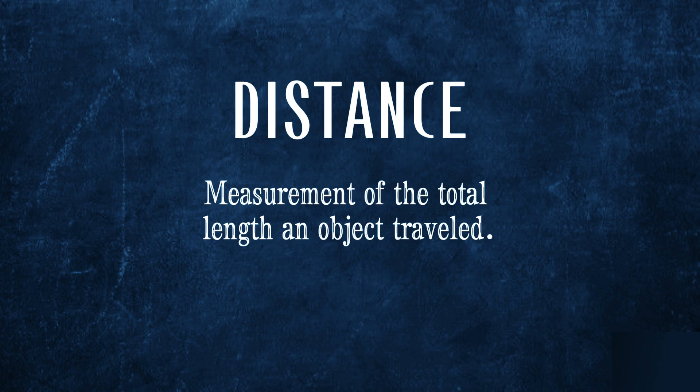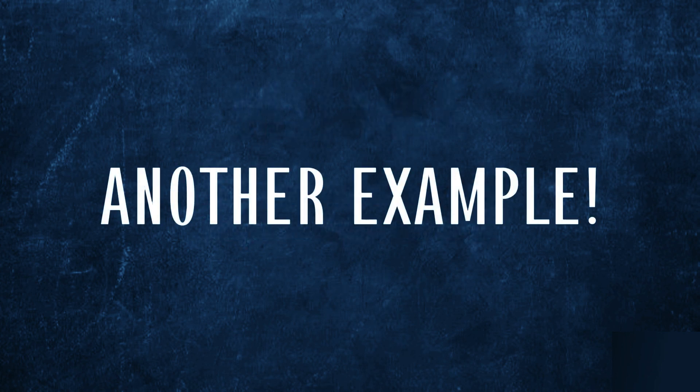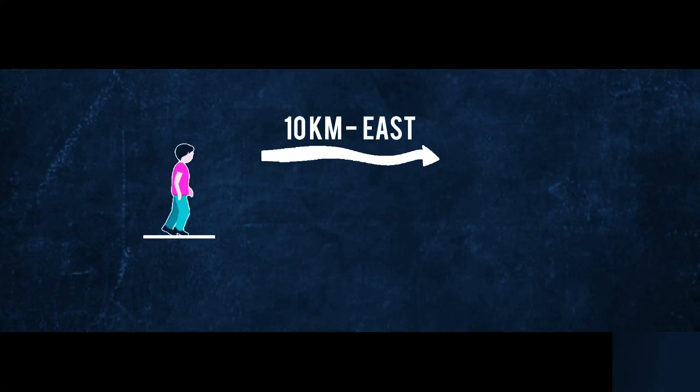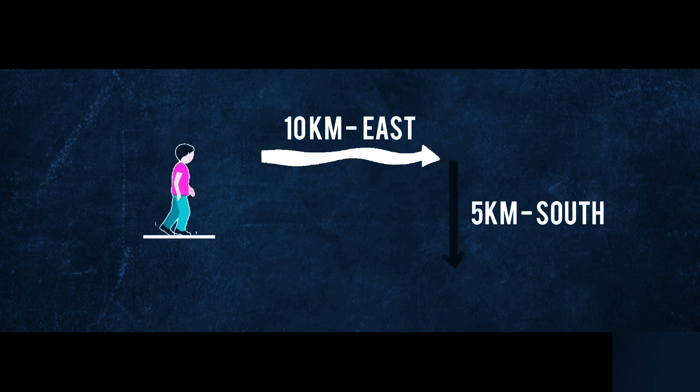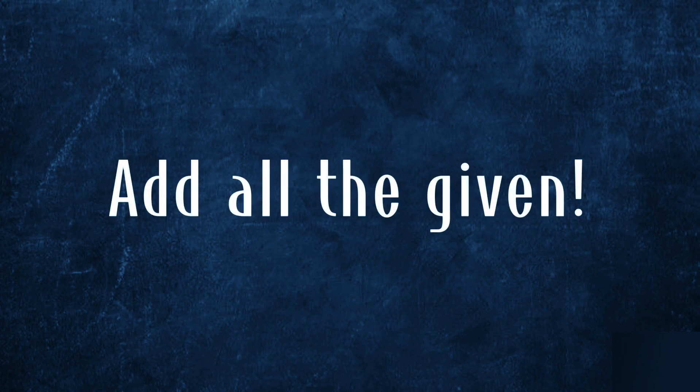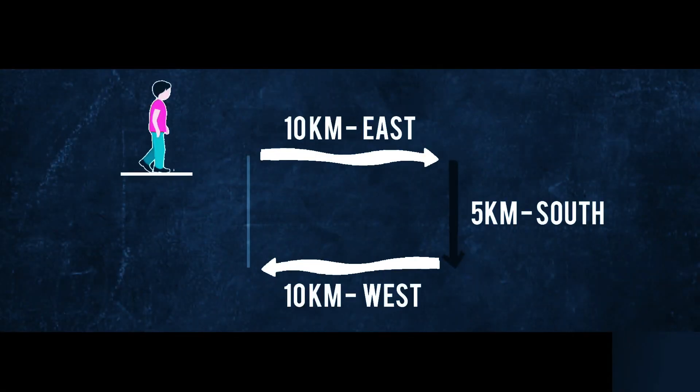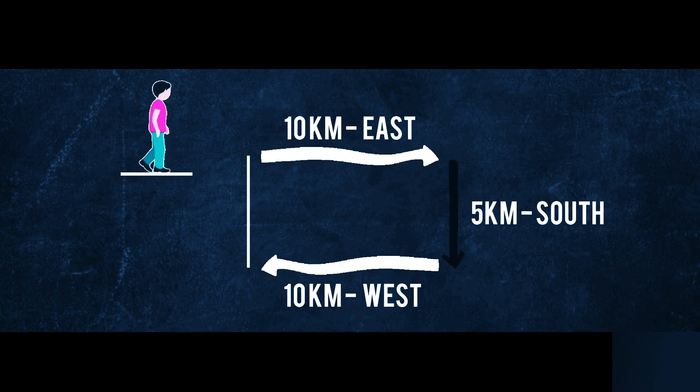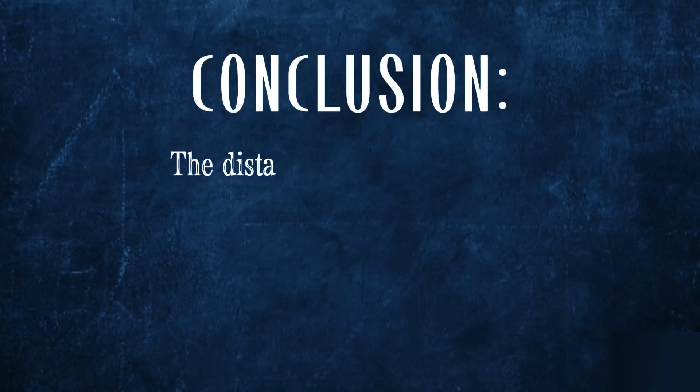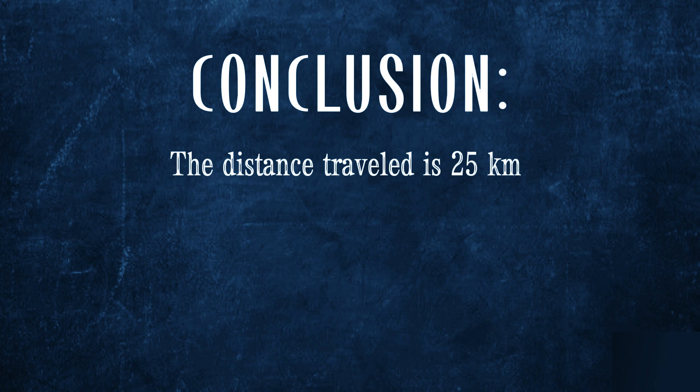Distance is the measurement of the total length an object traveled. Let's take a look at another example. A person walks 10 km east, 5 km south, and 10 km west. To get the distance, add all the given: 10 km plus 5 km plus 10 km is equal to 25 km. The shortcut or path that was left where the person could have just walked straight to is called displacement. Thus, the distance traveled by the person is 25 km and the displacement made is 5 km south.